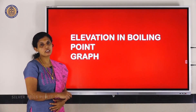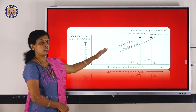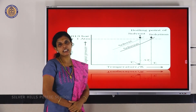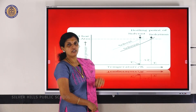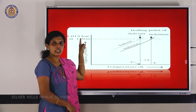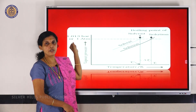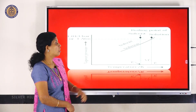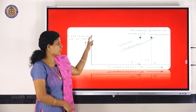Let us consider the elevation in boiling point graph. When we plot vapor pressure versus temperature, we get a curve, not a straight line. As temperature increases, vapor pressure of the solution also increases. This curve corresponds to the vapor pressure curve for pure solvent. This is the temperature at which vapor pressure of the solution equals external pressure — that is 1.013 bar, or 1 atmospheric pressure. And this is the point at which the vapor pressure of the solution equals atmospheric pressure, for the solution.